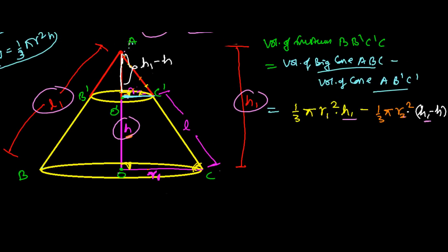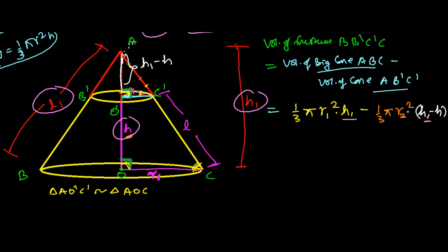To find h1, consider triangle AO'C' and triangle AOC. Since this is a right circular cone, both triangles have a 90° angle. Also, angle A is common to both triangles. With two equal angles, the third must also be equal, so the triangles are similar by the Angle-Angle-Angle (AAA) rule.